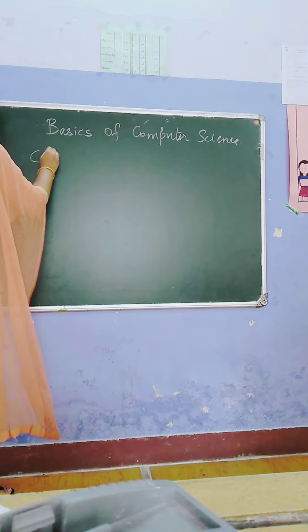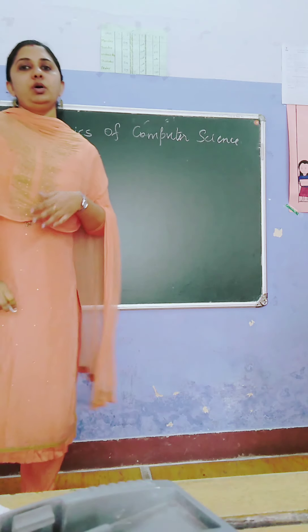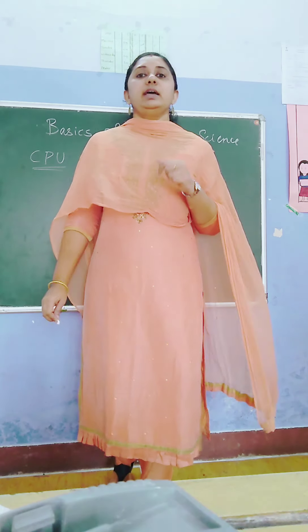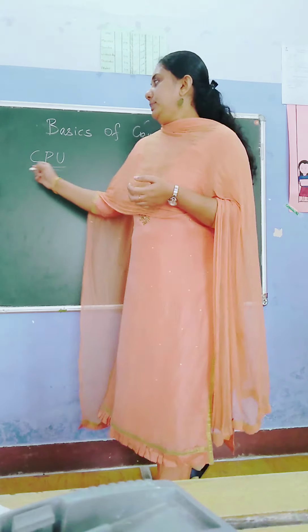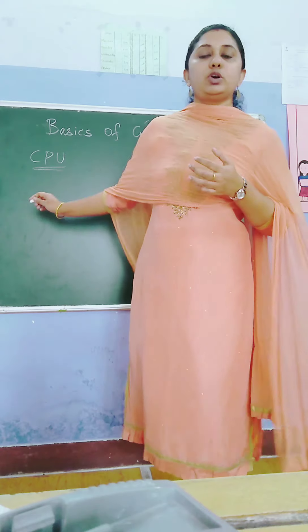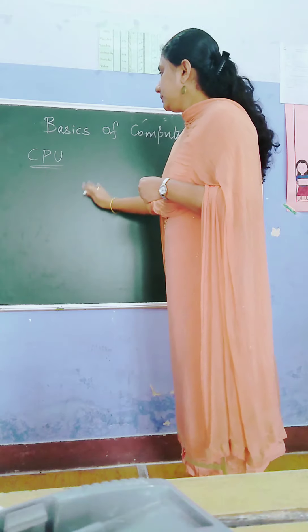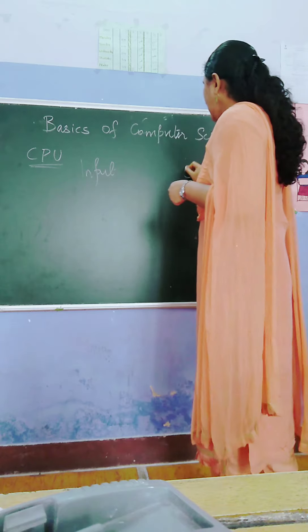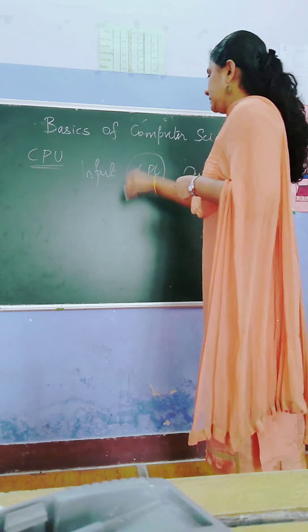About CPU we are going to study. Most of you have come across CPU in your previous class. CPU is called the brain of the computer. CPU stands for Central Processing Unit. It is called the brain of the computer, and its position is in between the input and output — our CPU is placed in between these two.